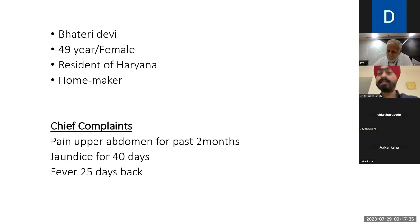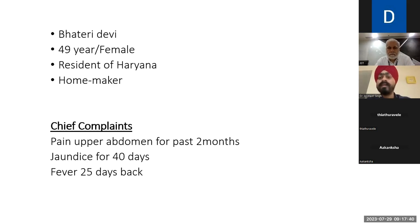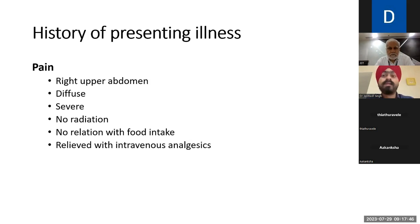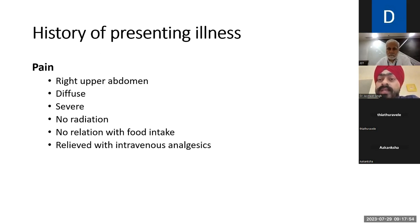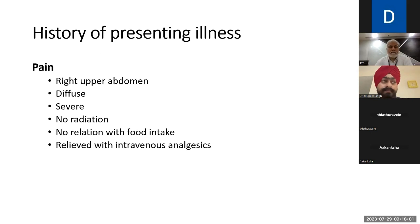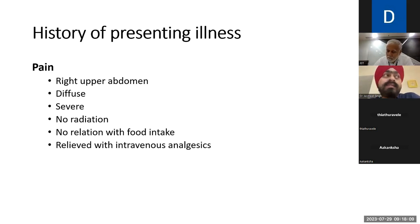History of presenting illness: The patient was apparently well 2 months back when she developed pain in the right upper abdomen. It was diffuse, severe in nature, non-radiating. There was no relation with food intake and the pain was relieved by intravenous analgesics.